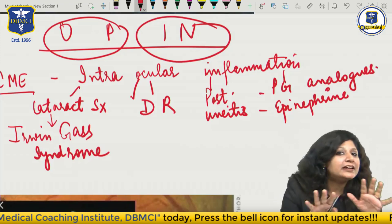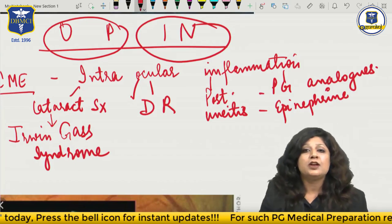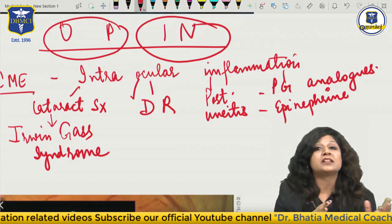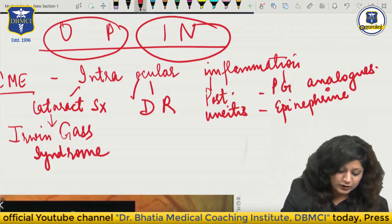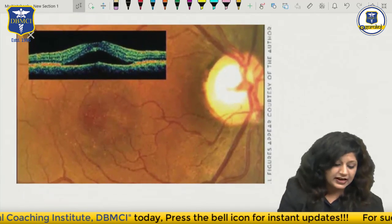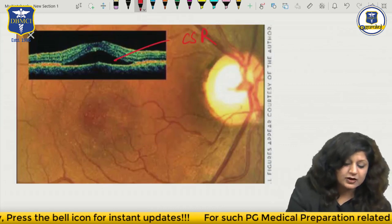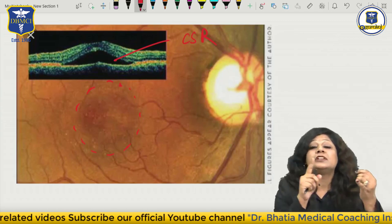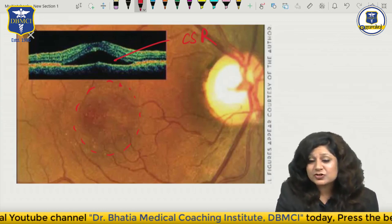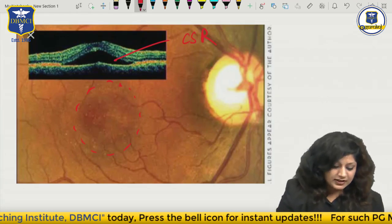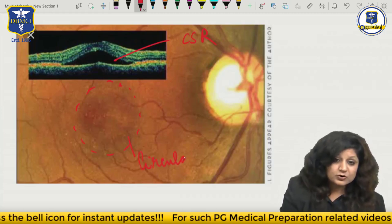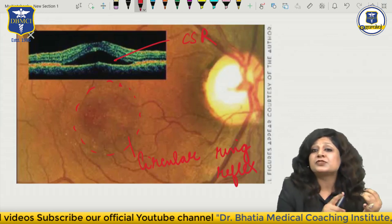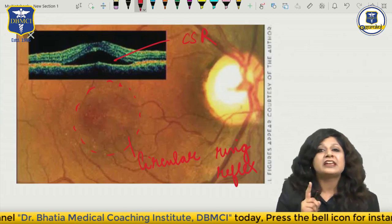The etiology is entirely different in CSR and in CME. Now what will you get in the fundus? If I do ophthalmoscopy in cases of CSR and CME, what is the difference? In CSR, because of the detachment, the macula is elevated. Now what is the shape? That is why this is called the circular ring reflex. When you see the fundus of a CSR patient, we will get a circular ring reflex.